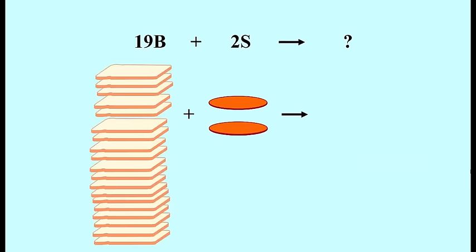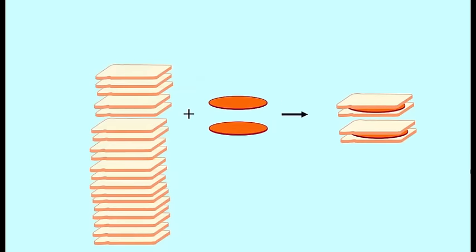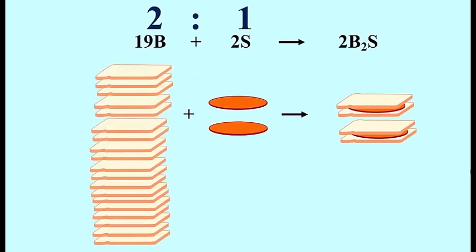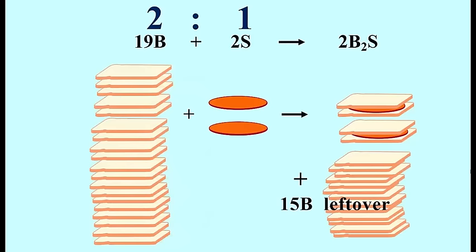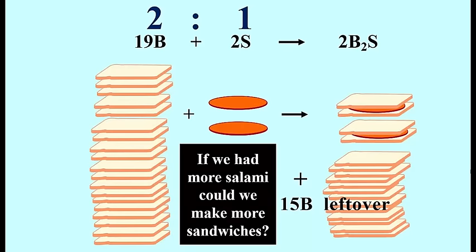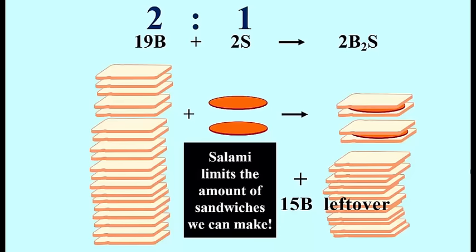So let's take a look at what that means. With 19 pieces of bread and two salamis, we're still stuck with that two-to-one ratio, and so we're still only going to get two sandwiches, and now we have some bread left over. If we had more salami, could we make more sandwiches? Yes, of course we could. So the salami limits the amount of sandwiches that we can make, and we call the salami the limiting reactant — or in this case the limiting ingredient.